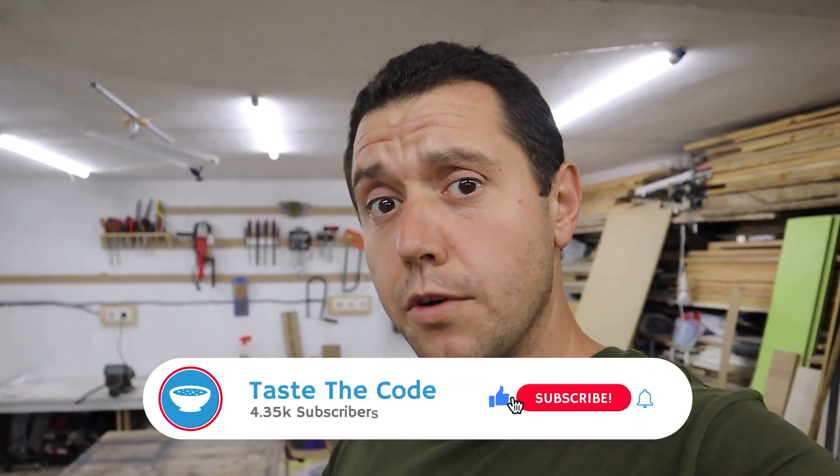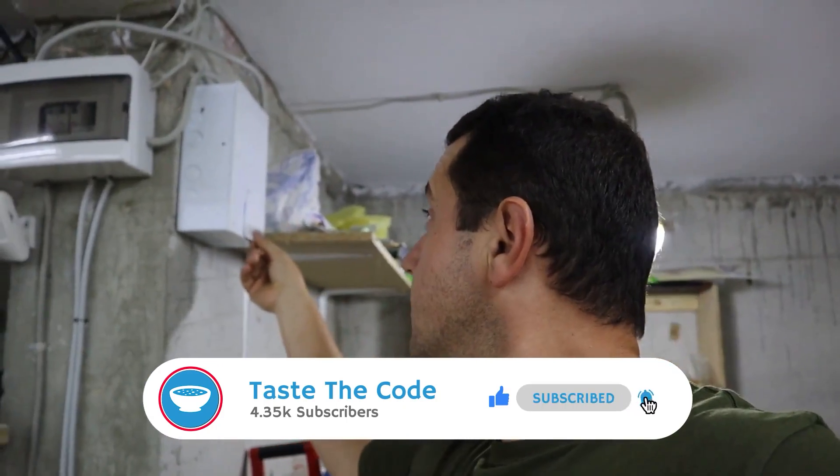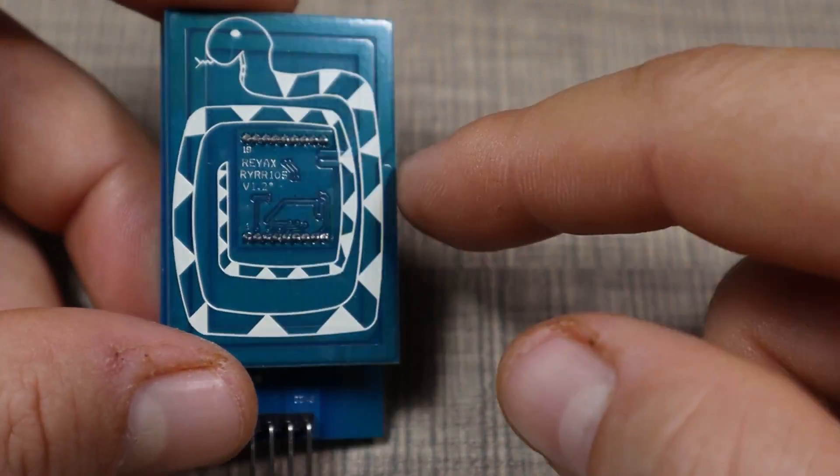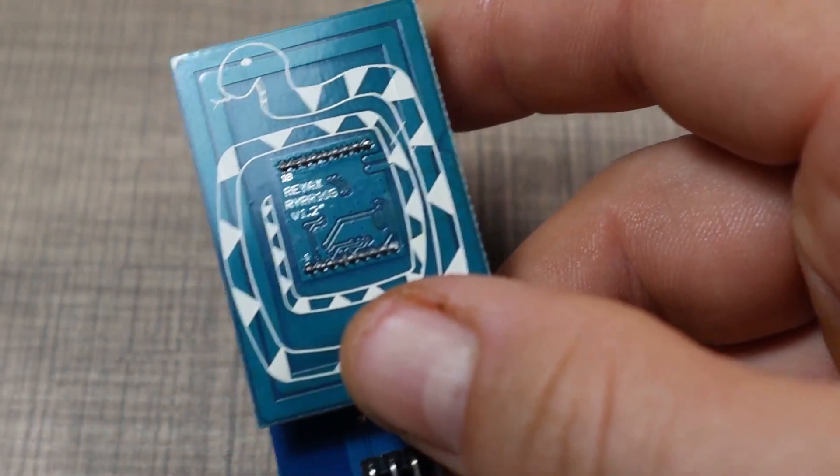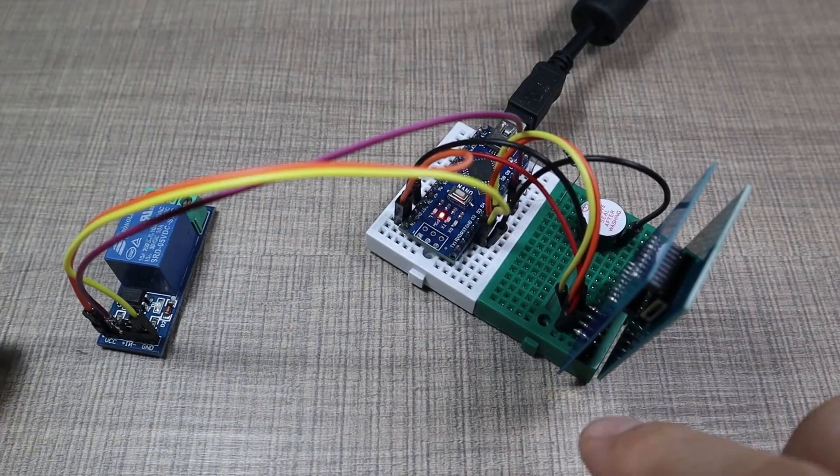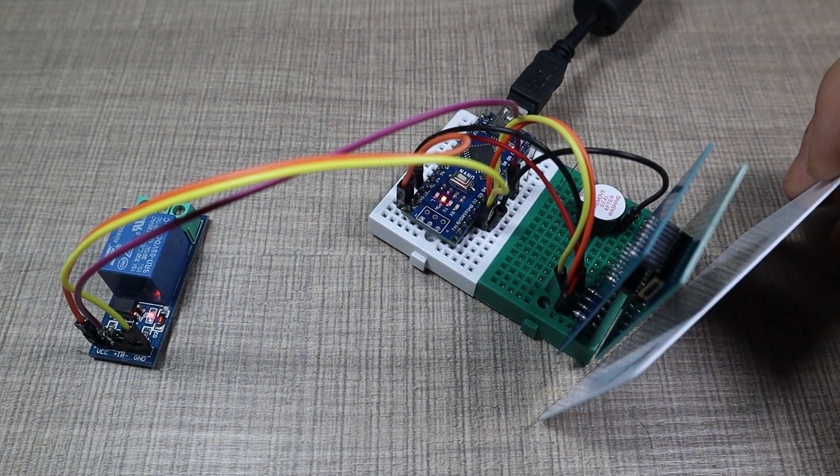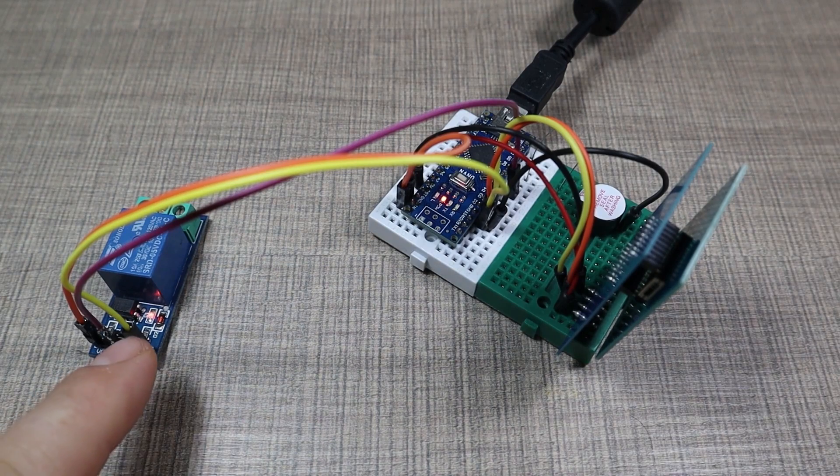On Instructables, I found this great workshop safety project by Taste the Code. Its execution is simple enough. An Arduino Nano reads the input from an RFID tag reader, and depending on the tag presented, it triggers a relay.